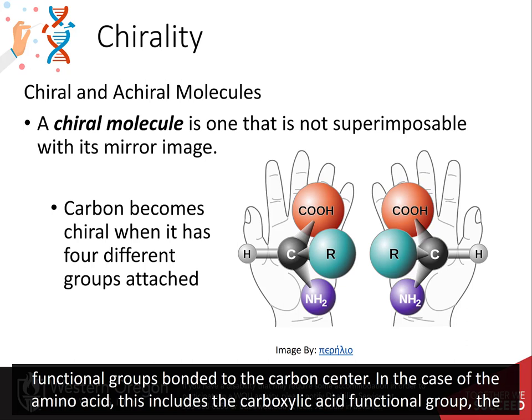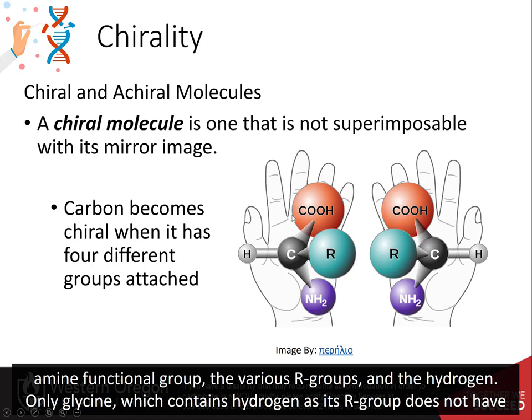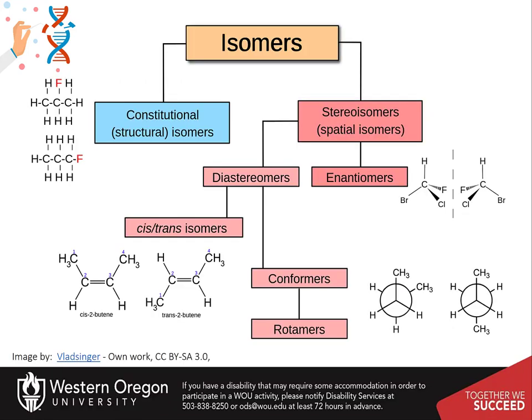In the case of the amino acid, this includes a carboxylic acid functional group, the amine functional group, the various R groups, and the hydrogen. Only glycine contains hydrogen as its R group and does not have chirality.